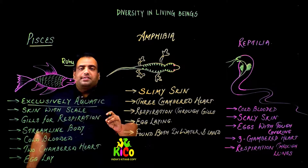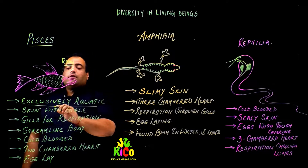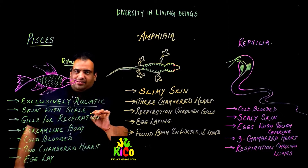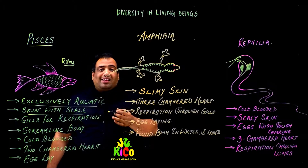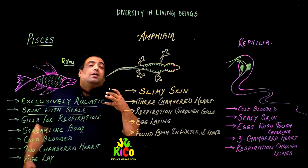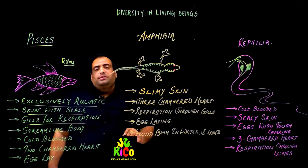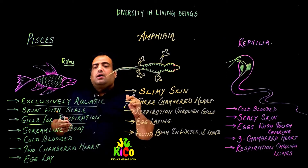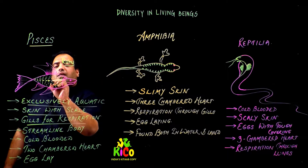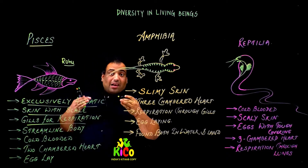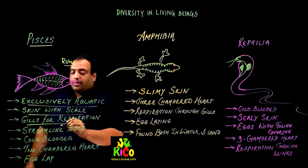The first characteristic of Pisces is that they are purely and exclusively aquatic — they live in water. Their skin is covered with scales. They have gills for respiration, through which they breathe the oxygen dissolved in water. Their body is streamlined so they can move through water. They also have a lateral line which helps balance the hydroacoustic pressure on their body.